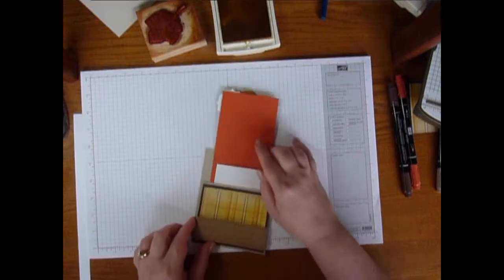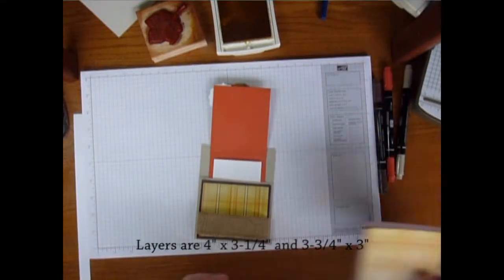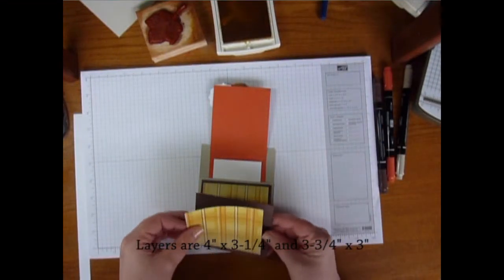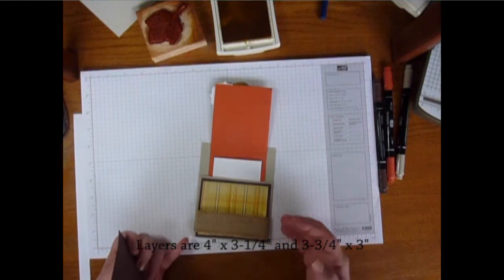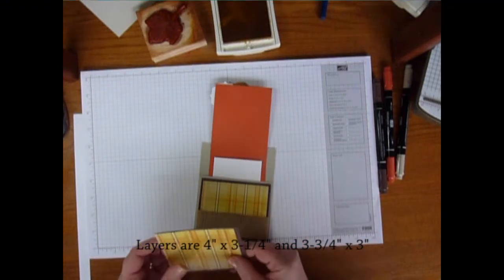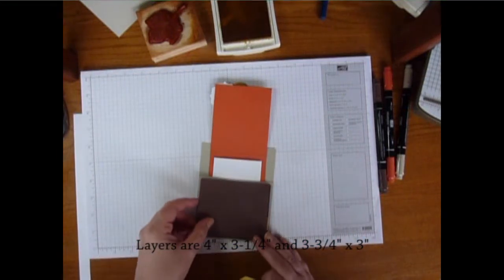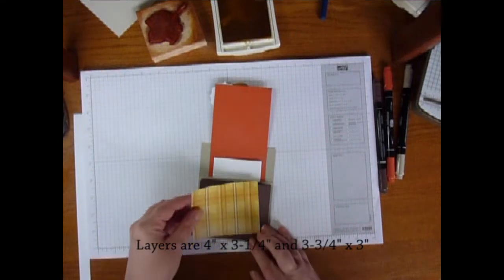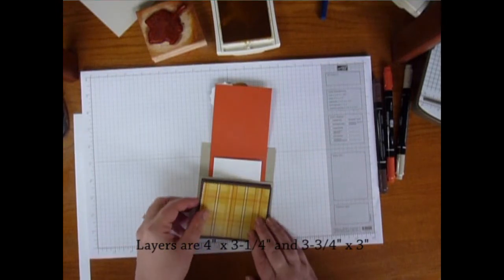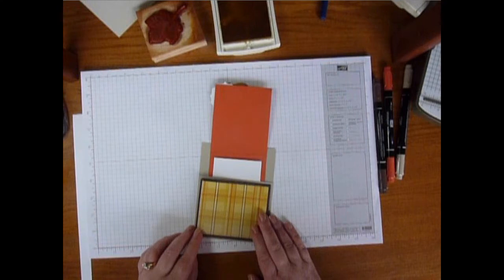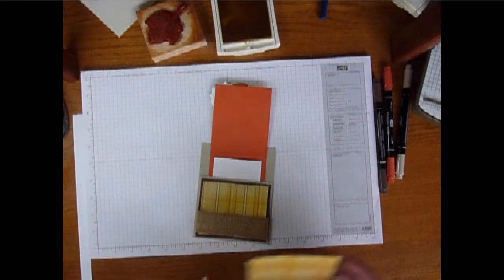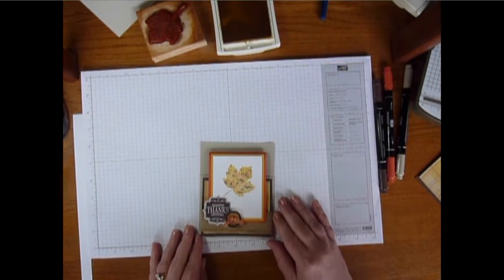The other thing I want to show you is for this base part here. I've also done some layering pieces. So again, 4 1⁄4 wide by 3 1⁄2. So this piece is going to be 4 inches wide by 3 3⁄4. And then you can go down one more piece as well if you want to. So it'll be 3 3⁄4 wide by 3. I've just added some burlap there, and this card's ready to go.